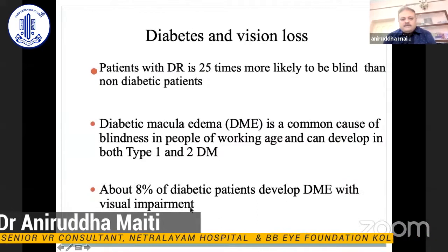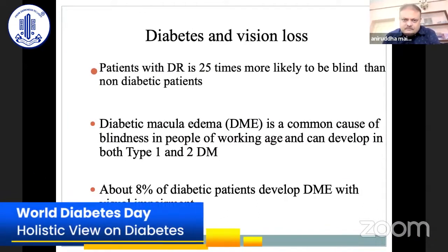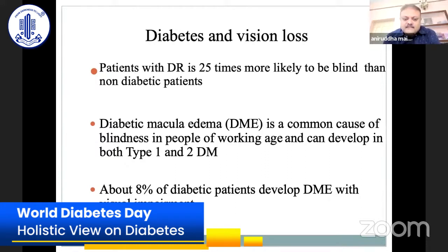Coming to diabetes and visual loss — what is the relation? Patients with diabetic retinopathy are 25 times more likely to be blind than non-diabetic patients. Diabetic macular retinopathy is the common cause of blindness in people of working age and can develop in both type 1 and type 2 diabetes. Additionally, 8% of diabetic patients develop DME with visual impairment.